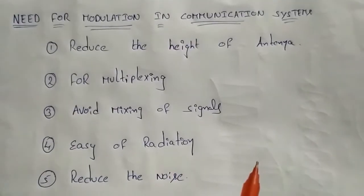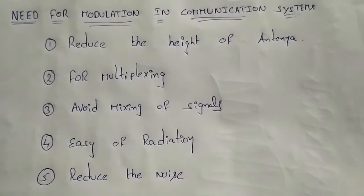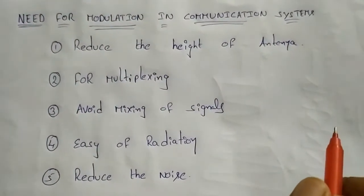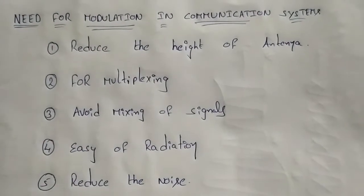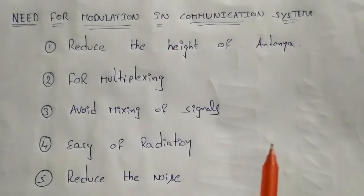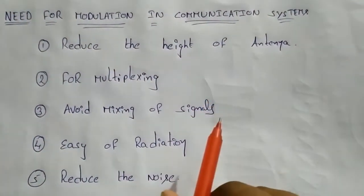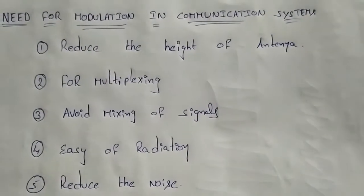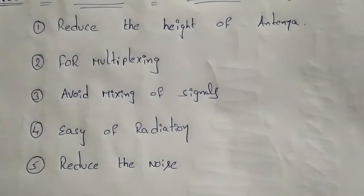In the last class, we discussed the critical role of modulation in communication systems. The main advantage is that we need to consider the height of the antenna. For example, if you have cell towers placed two to three kilometers apart, each tower needs to be within range of the other.